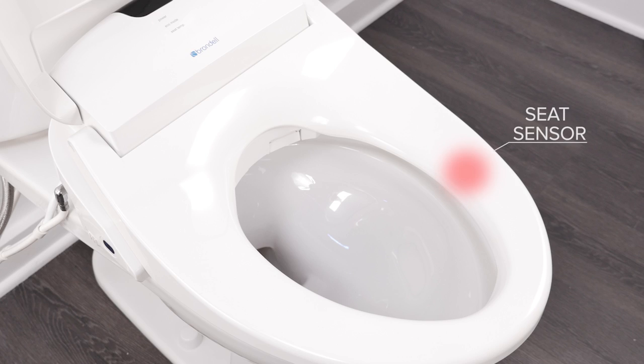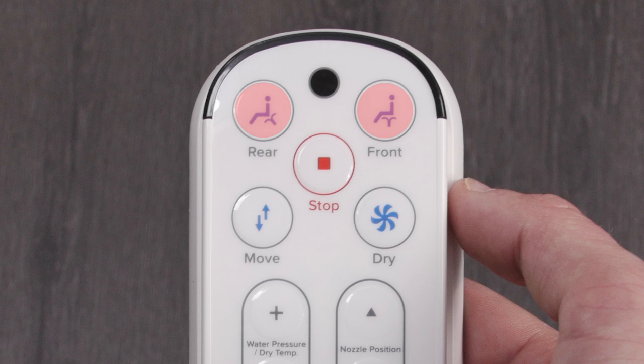To use the bidet normally, sit on the bidet seat, ensuring skin contact with the seat sensor, and start a wash by pressing either the rear or front button on the remote control.